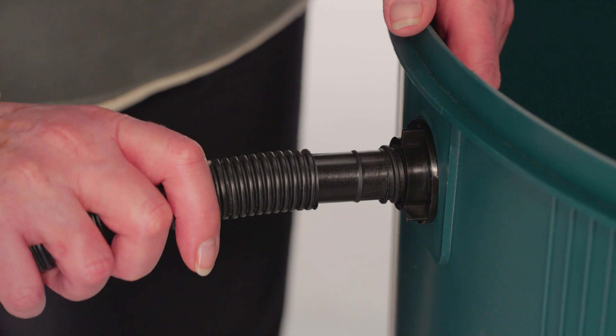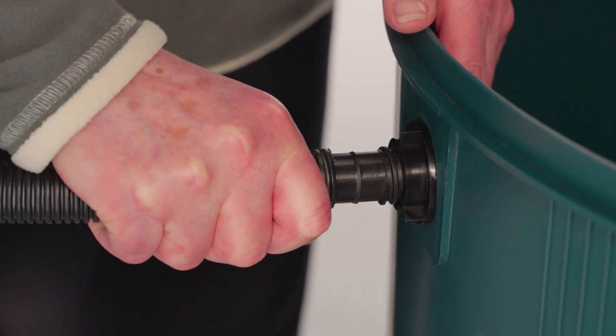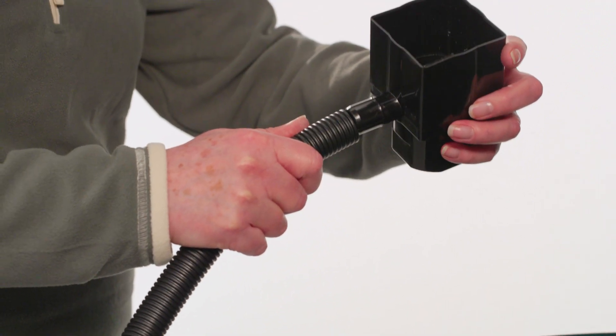Now fit the shorter hose and downpipe connector kit in place. There is an additional bung that can be fitted in the other hole if not connecting to another butt.